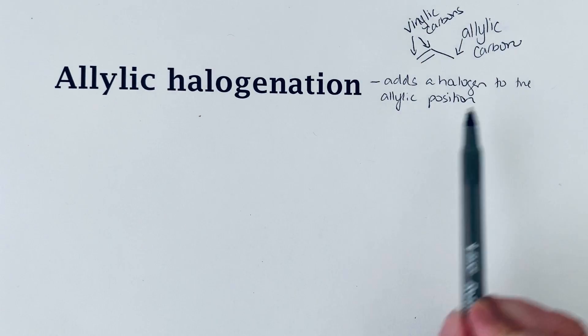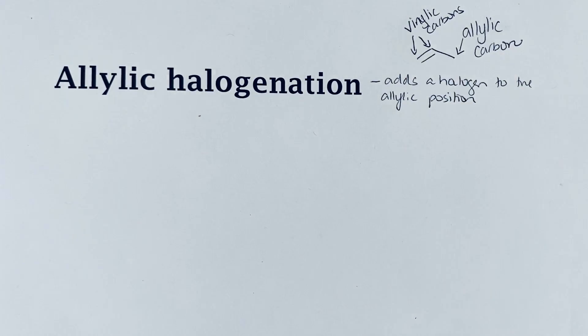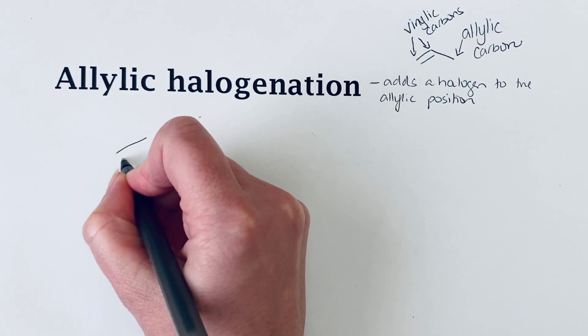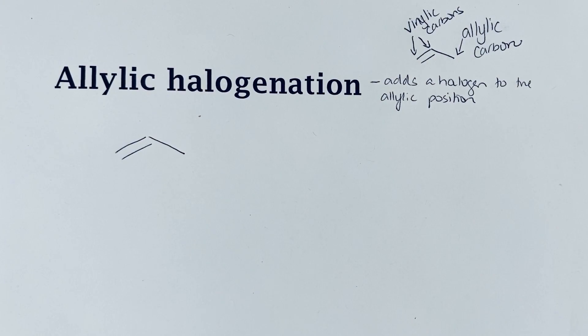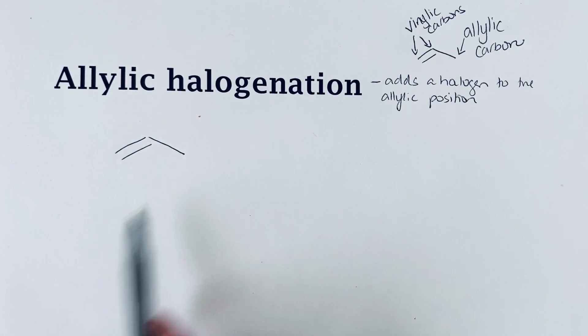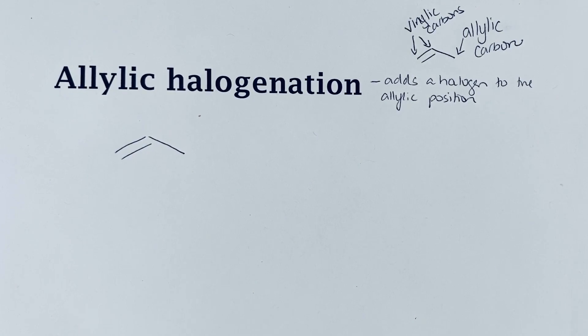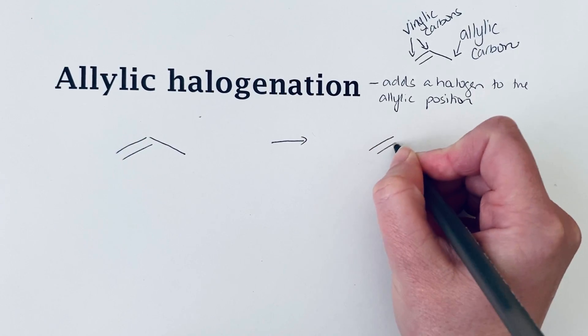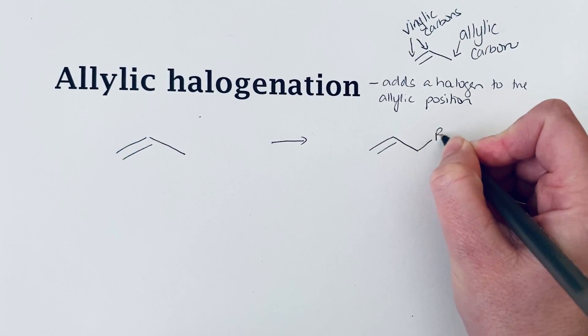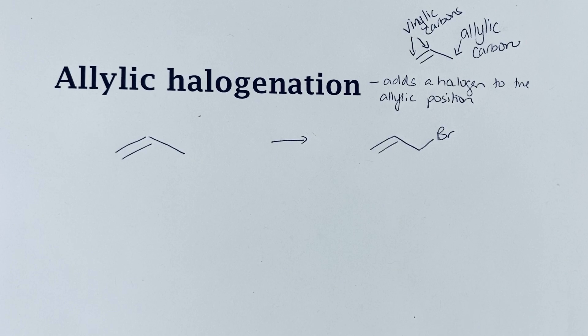If we're wanting to introduce a halogen at this position, let's take a look at a simple allylic molecule, just propene. The halogen we're going to be adding here is bromine. We want to find a way to add a bromine to that allylic position.